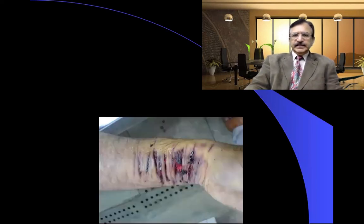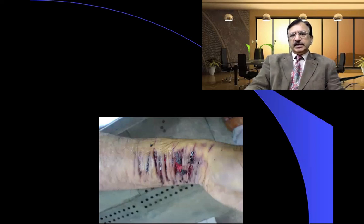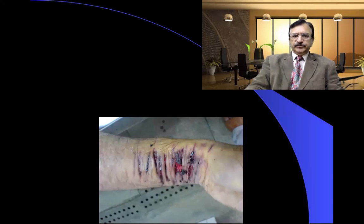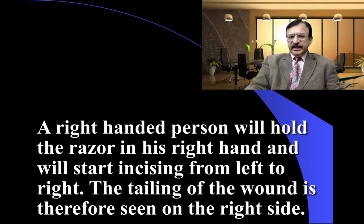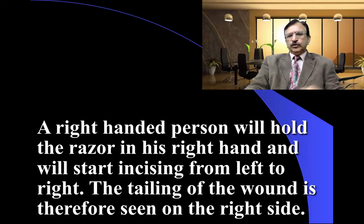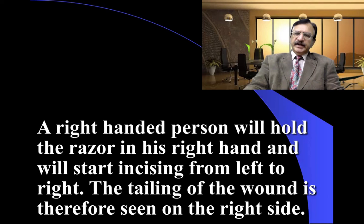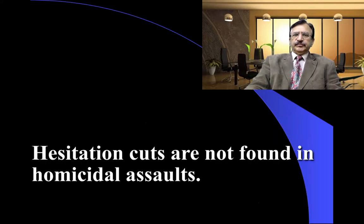A photograph shows tentative cuts in the wrist cut. A right-handed person will hold a razor in his right hand and will start incising from left to right; the tailing of the wound is therefore seen on the right side. Hesitational cuts are not found in homicidal assaults.